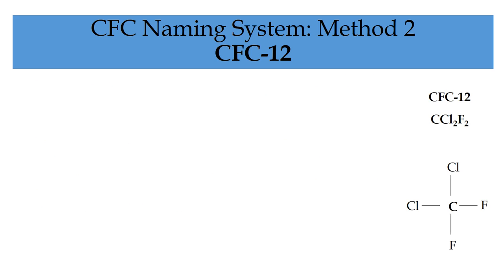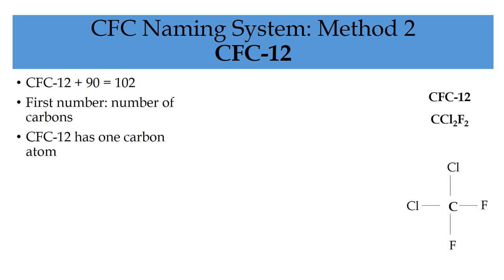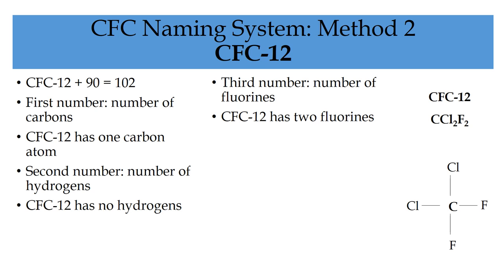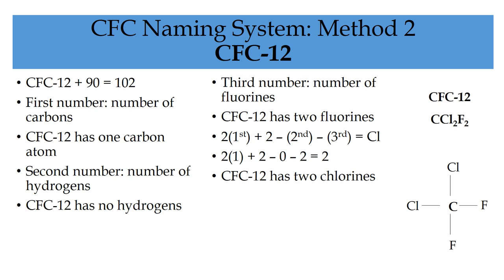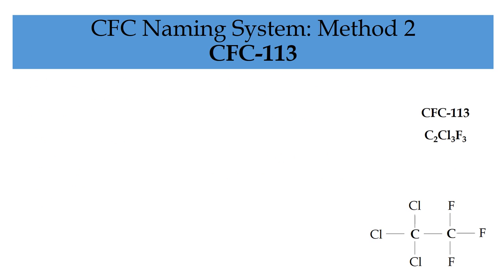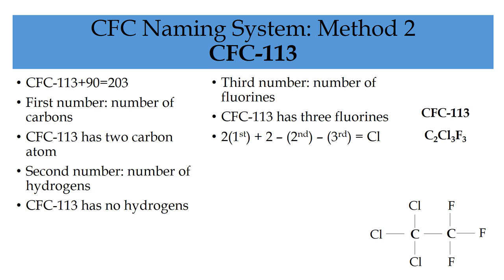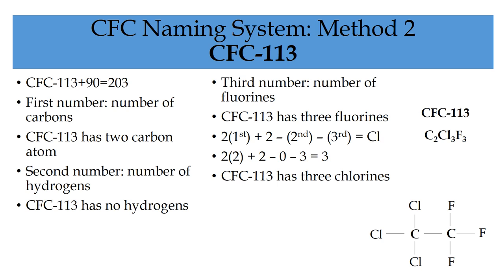CFC-12 plus 90 equals 102, so the first number is one carbon, the second number is zero hydrogens, and the third number is two fluorines. Using the same calculation, CFC-12 has two chlorines. Finally, CFC-113 plus 90 equals 203, so it has two carbons, zero hydrogens, and three fluorines, and using the calculation you can see it has three chlorines. You can see that the first method and the second method give the same results, and you can use either one to work out the chemical formula for any CFC using its number.